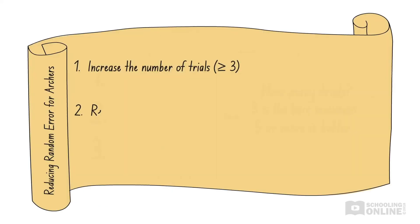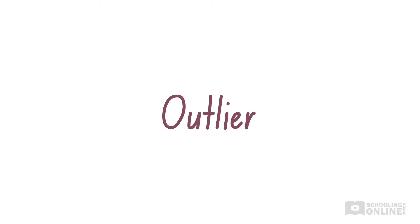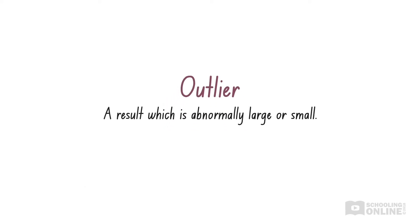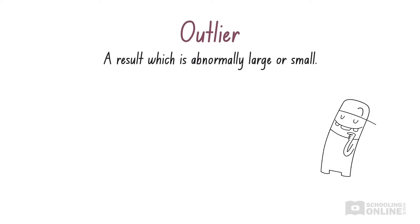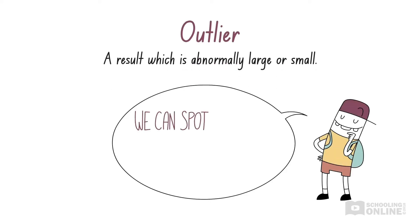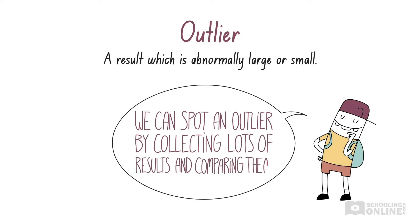The second way to reduce the effects of random error is to remove outliers from our results. An outlier is a result which is abnormally large or small. Outliers may be caused by extremely large random errors, making them much bigger or smaller than all the other data points. The only way we can spot an outlier is by collecting lots of results and comparing them.